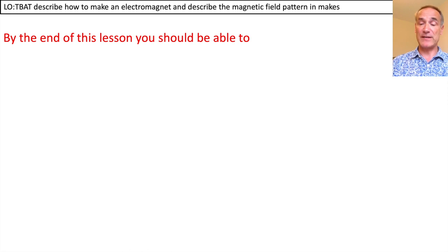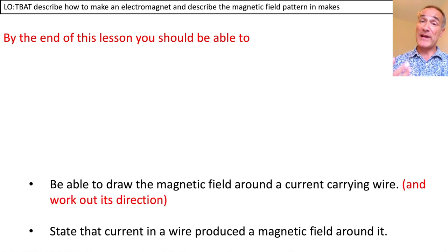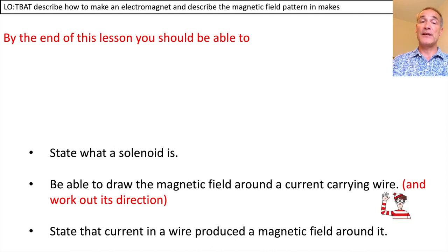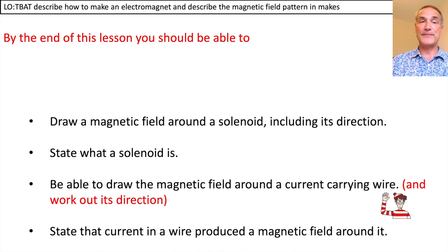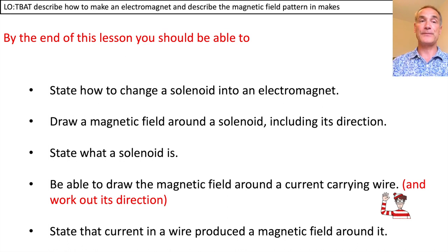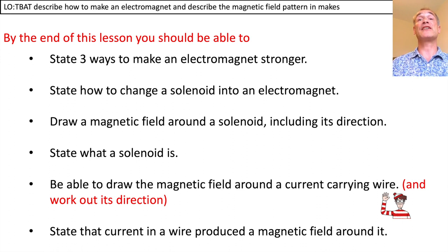Reviewing the learning objectives: you should be able to state that current in a wire produces a magnetic field; draw the magnetic field around a current-carrying wire in concentric circles getting further apart, and determine direction using the right-hand grip rule; state that a solenoid is a coil of wire; draw the solenoid magnetic field with direction (out of north, into south); state how to change a solenoid into an electromagnet by adding an iron or steel core; and state the three ways to make an electromagnet stronger: greater number of turns, more current, and an iron or steel core inside.